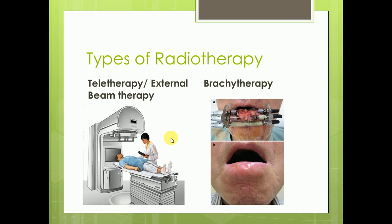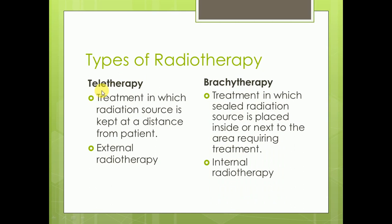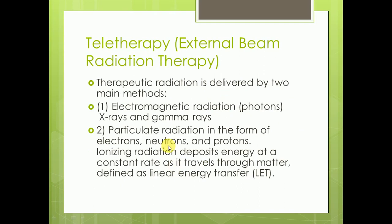There are two main types of radiotherapy: external beam therapy (teletherapy) and brachytherapy. In teletherapy, the radiation source is kept at a distance from the patient — also known as external radiotherapy. In brachytherapy, a sealed radiation source is placed inside or next to the area requiring treatment — also known as internal radiotherapy.